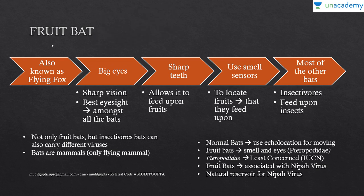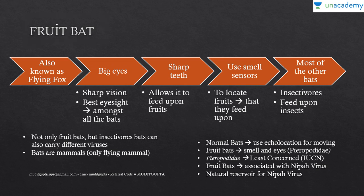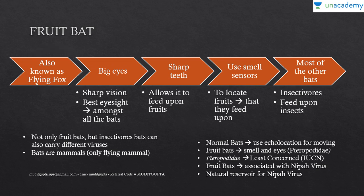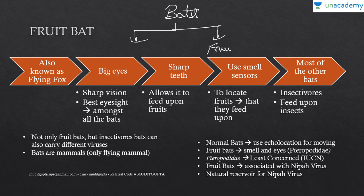Fruit bat is a very important species that came up in 2019. First of all, it is called Flying Fox — fruit bat is called Flying Fox. If I talk about bats, there are two species of bats: one is fruit bat and one is normal bat.